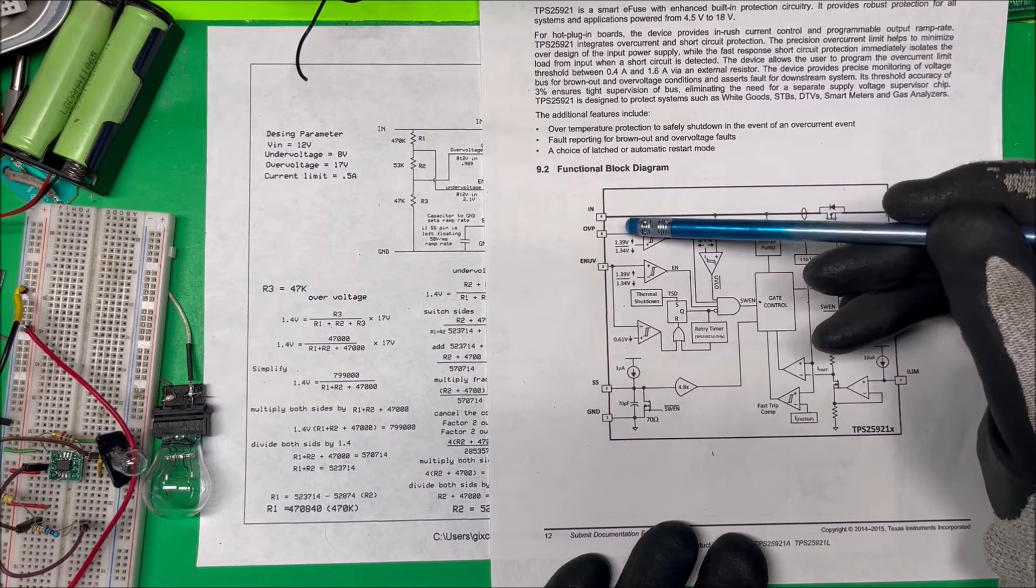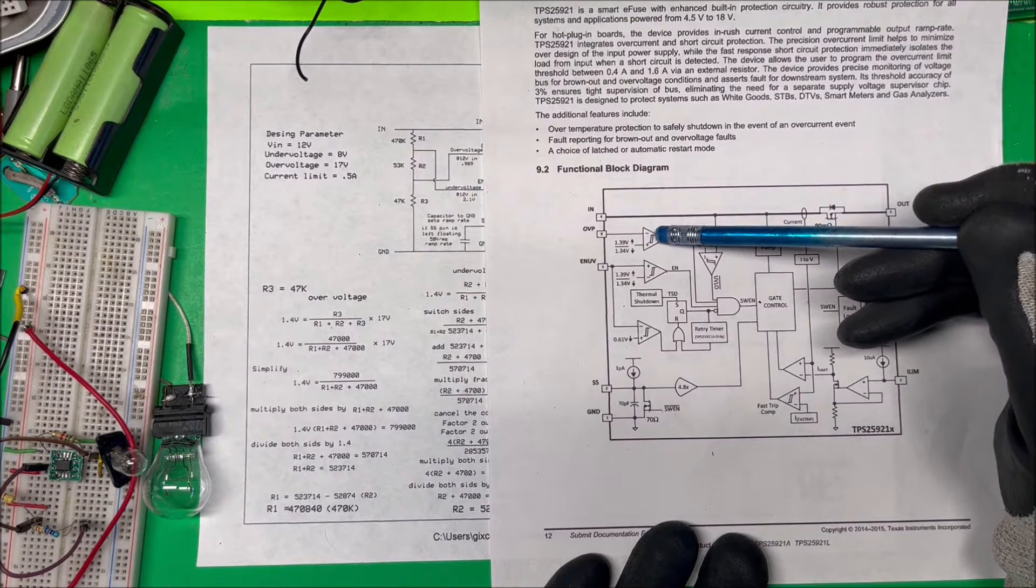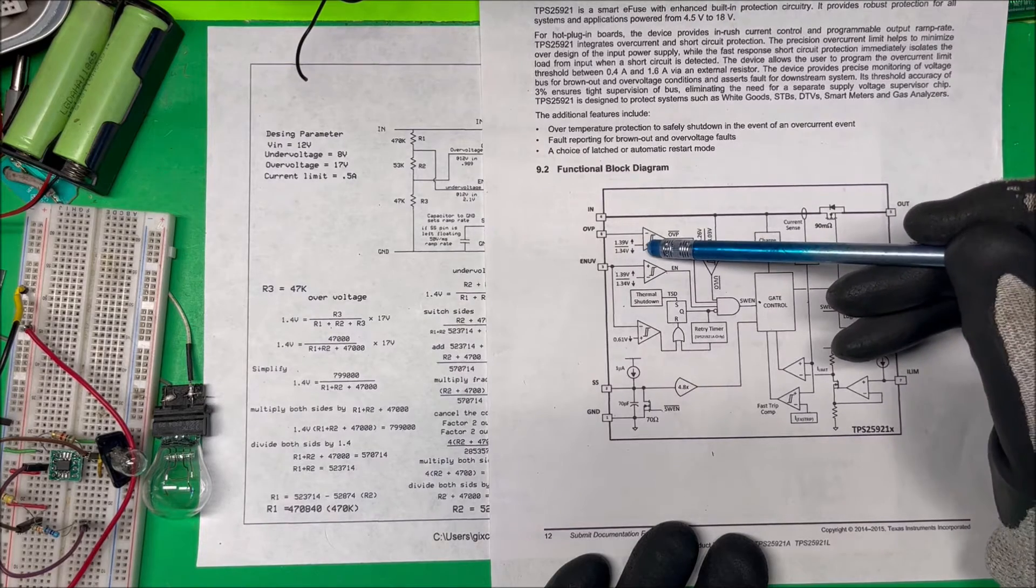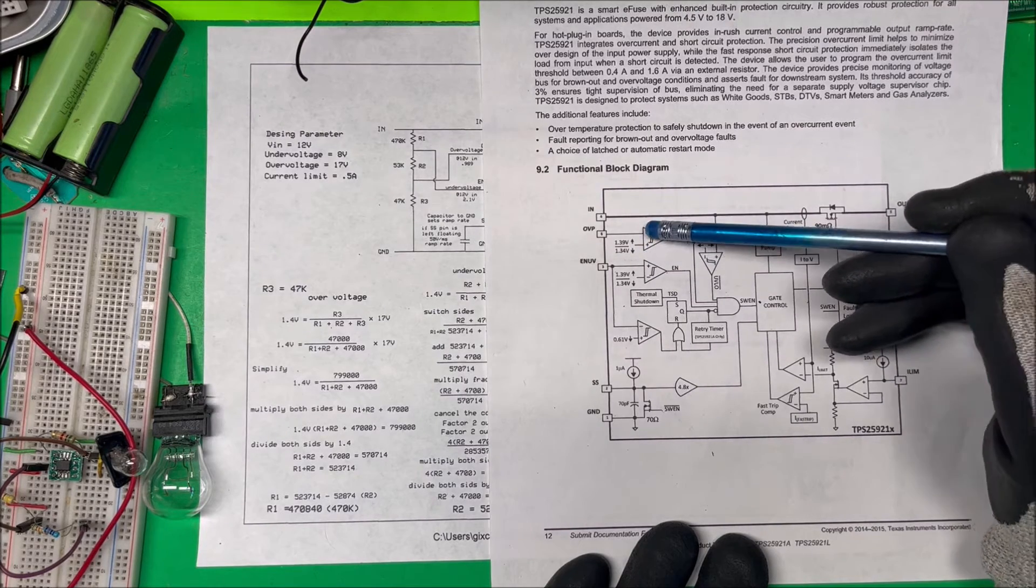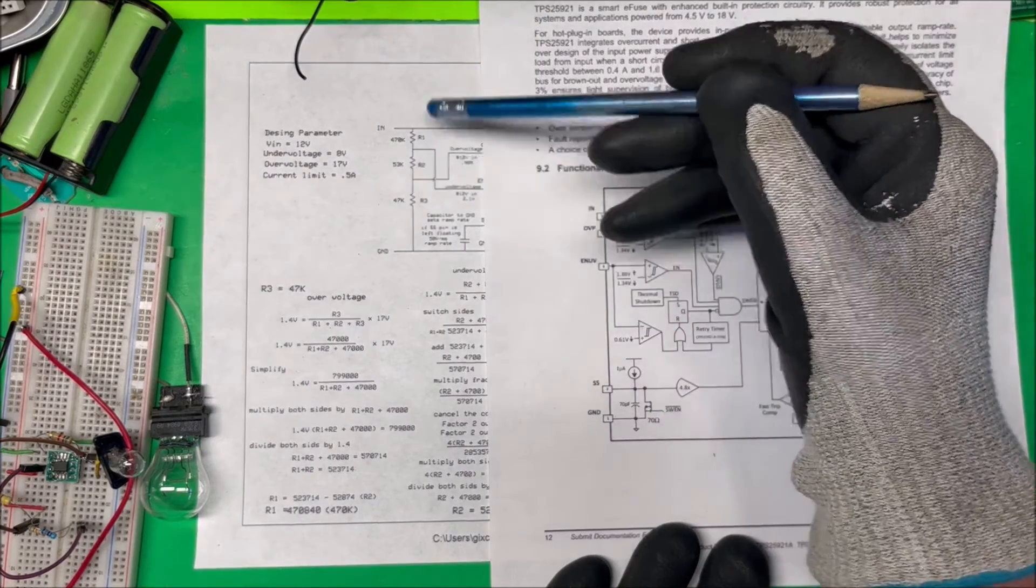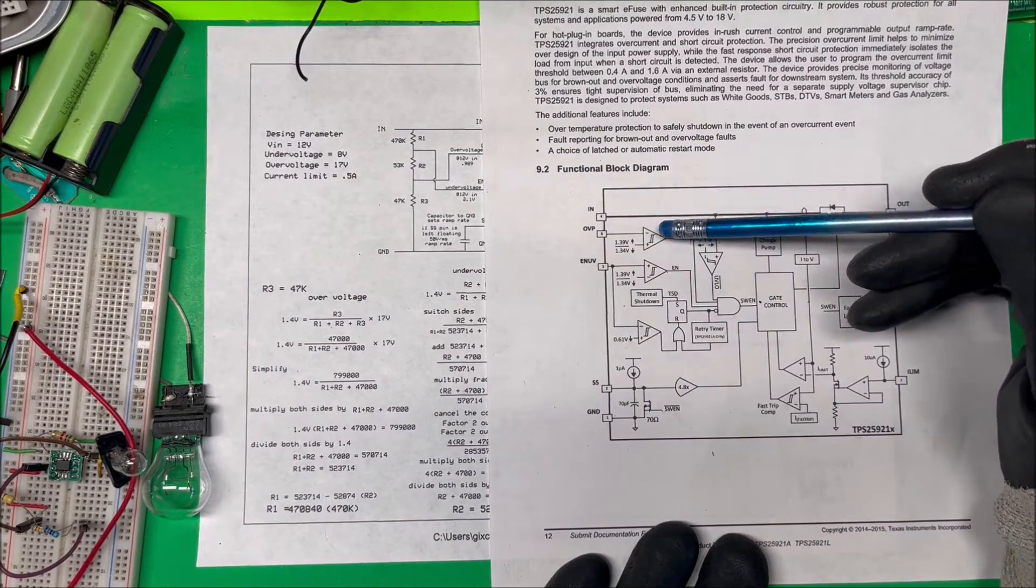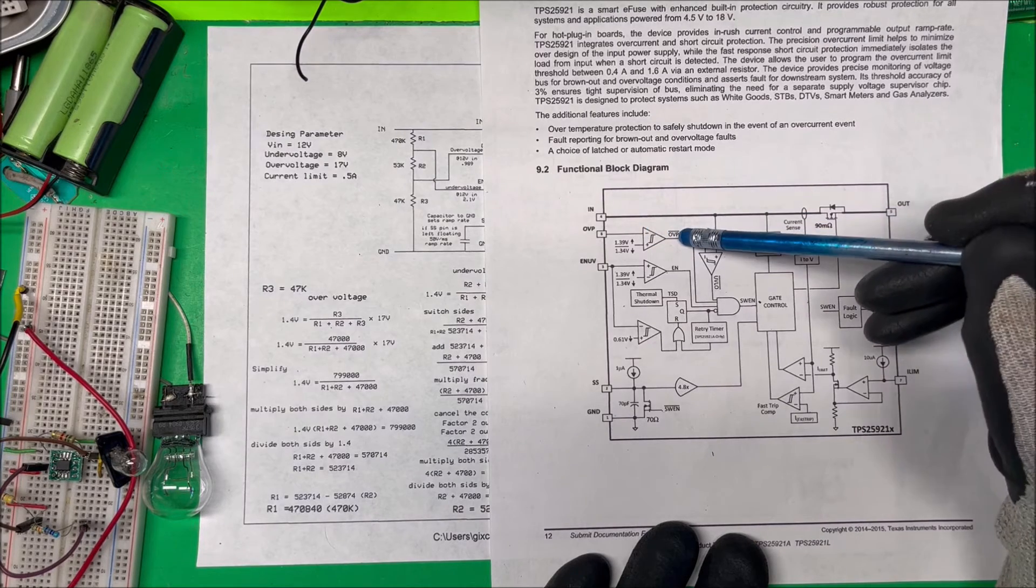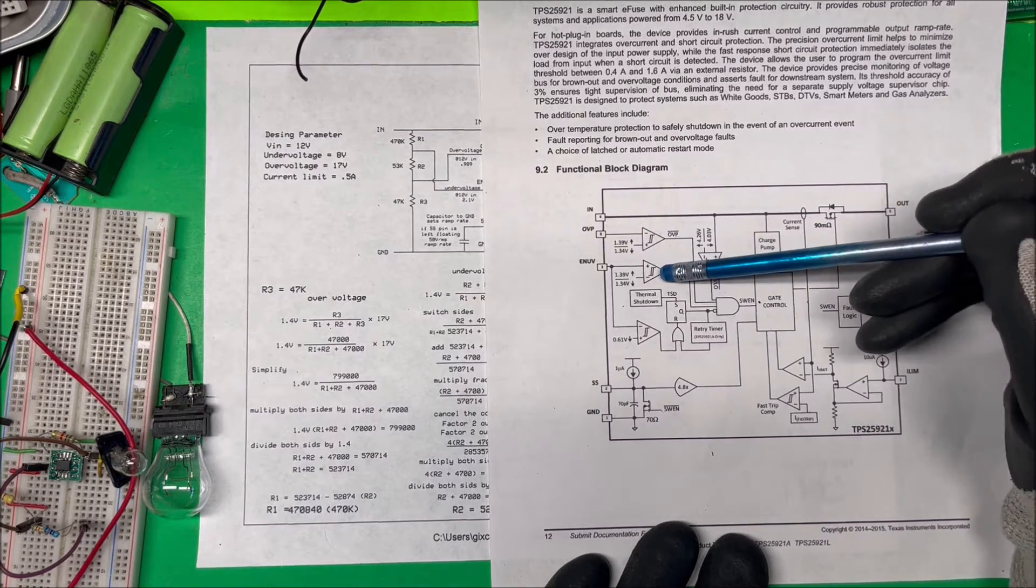This pin A here is their overvoltage pin. We have an internal reference of 1.4 volts on the positive side, and on the negative, depending on our voltage divider, we're going to have 1 volt. The positive is higher than the negative, so this pin is going to go high.